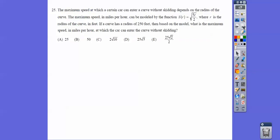All right, I'll stop after this one and do part two. The maximum speed at which a certain car can enter a curve without skidding depends on the radius of the curve. The maximum speed in miles per hour can be modeled by that function right there where r is the radius of the curve in feet. If a curve has a radius of 250 feet, then based on the model, which is the maximum speed in which the car won't skid? So this is just plugging in, you guys.